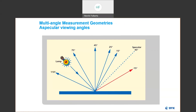Due to those effects, when we measure color with effect pigments, we need to measure it at multiple angles because the lightness or color hue can change from observation angle to observation angle. In order to fully characterize the color of such a coating, we can't just measure it at one angle. Two surfaces could match at one measurement angle but not match at another, so it's important to measure color at multiple angles to make sure the color matches at all angles.